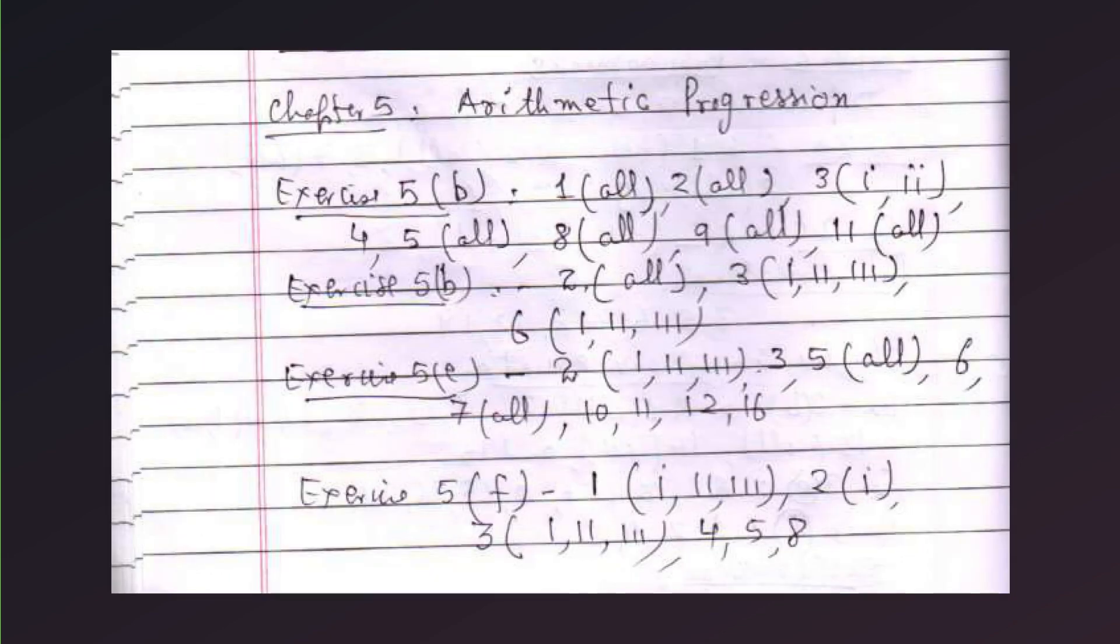Chapter 5, arithmetic progression. Before I am going to arithmetic progression, just once more I remind you all the students that these questions are originally from your textbook, main textbook of mathematics prescribed by Meghalaya Board of School Education. So try to follow your original textbook available in the market. You take yours in your class every day and the textbook of mathematics by EMBO. Chapter 5, mathematical progression. We are going to exercise 5B. Question 1 all, 2 all, 3 numbers 1, 2, 4, 5 all, 8 all, 9 all, 11 all.